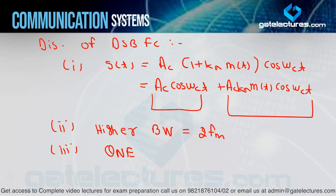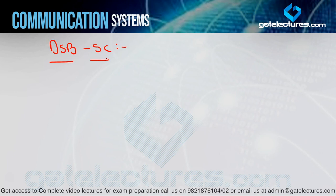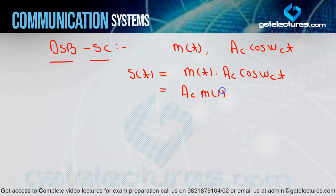Now in this video we start with DSB-SC, that is called double sideband with suppressed carrier. That means in the last technique which had full carrier — where the carrier term was present — here we suppress the carrier. The carrier term is removed. For DSB-SC, if I consider the modulation equation: message signal m(t) and carrier signal AC·cos(ωC·t), then the modulated signal in DSB-SC is: m(t) × AC·cos(ωC·t), written systematically as AC·m(t)·cos(ωC·t).